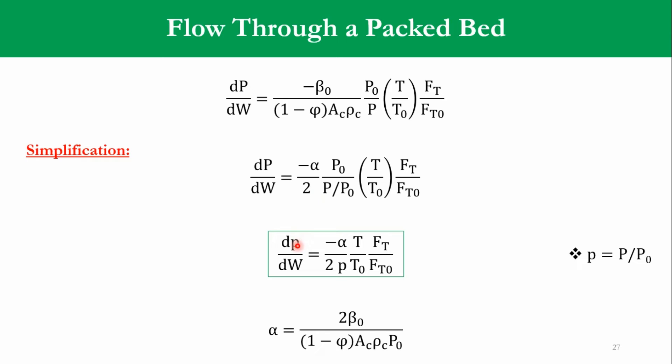And accordingly, dp, which is small p over dW, that is equal to minus α over 2P. This P over P0 actually goes to P. As you can see, P is equal to pressure ratio. And in the same way that P0 has gone here, gone to the differential, so that has gone to small p. So, minus α over 2P times T over T0 times FT over FT0. This is the equation or the differential equation of the pressure ratio with respect to the weight of catalyst.